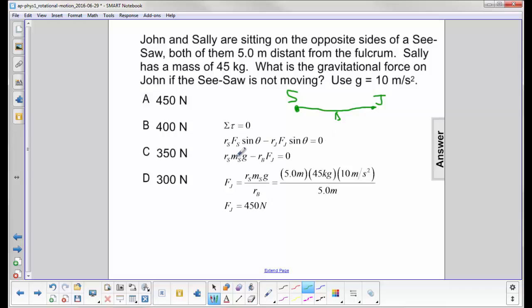Here's the mass of Sally. We don't know the mass of John, but we're trying to find the force on him, which is the gravitational force. So we don't have Mg here, we just have F. We solve for the force on John by dividing both sides by RB, put the numbers in, and we come up with an answer of 450 Newtons.